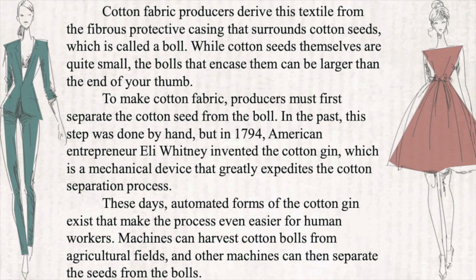Cotton fabric is derived from the fibrous protective casing that surrounds the cotton seeds, which is called a boll. While cotton seeds themselves are quite small, the bolls that encase them can be larger than the end of your thumb. To make cotton fabric, producers must first separate the cotton seed from the boll. In the past, this step was done by hand.